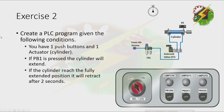Exercise 2: Create a PLC program given the following conditions. You have one push button and one actuator. If PB1 is pressed, the cylinder will extend. If the cylinder reaches the fully extended position, it will retract after 2 seconds.